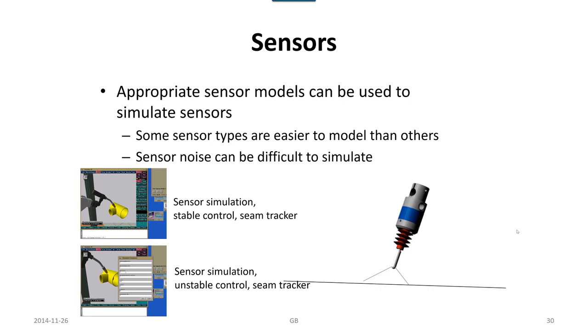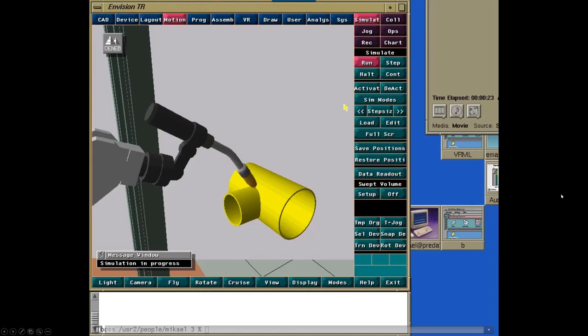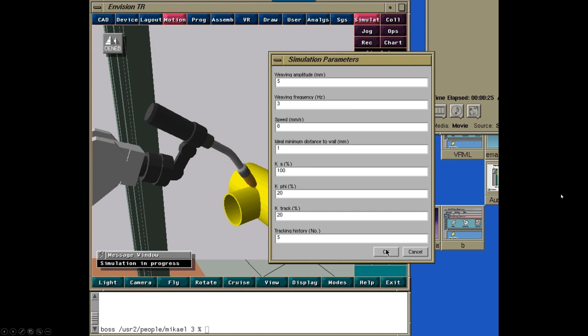But if we have a more complex situation, like vision systems, or in this case a seam tracking operation through arc welding, it becomes a bit more complex, but it's still possible if it is important. In this case, we perform a weaving operation.